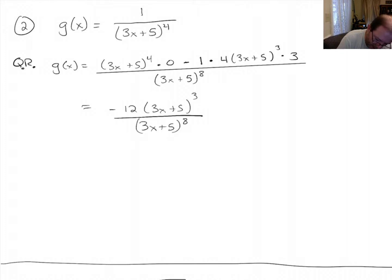Those are the same terms raised to different powers, so we can cancel three of these down here. And we're left with minus 12 over (3x + 5) to the fifth. And that is our answer.